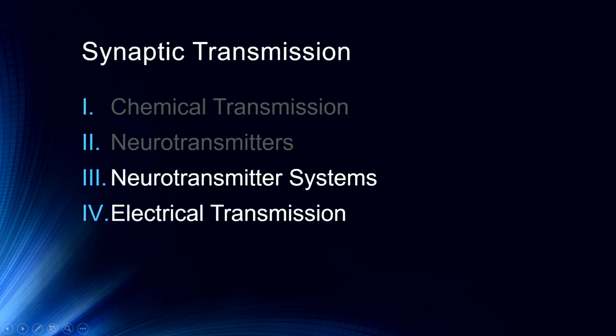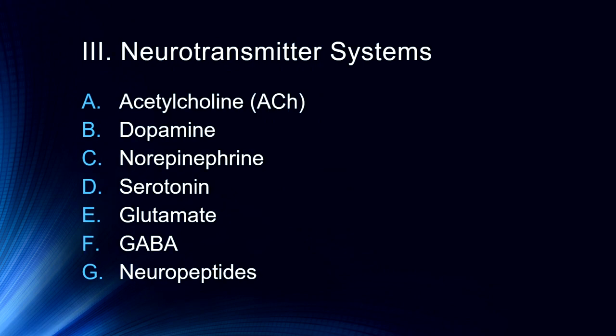I want to talk about specific neurotransmitter systems — that's the bulk of what we'll talk about in this lecture — and then finish with a brief discussion of electrical transmission, which isn't very common but does occur. The neurotransmitter systems we're going to cover are acetylcholine, dopamine, norepinephrine, serotonin, glutamate, GABA, and the neuropeptides. There are others, including neurosteroids, which we'll get into at some point.